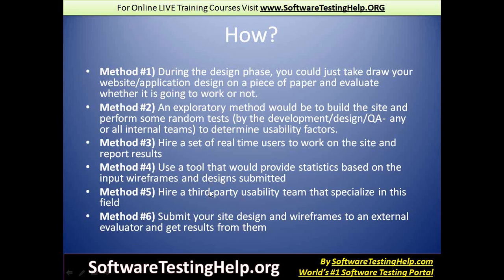Method four: there are automation tools where you can upload wireframes of your application and it will tell you whether it is a usable design. Method five: there are third-party usability teams who specialize in usability testing — they can come in, do an analysis, and report back results. Method six: you can submit site designs to an external evaluator and get results. Methods five and six are similar, but in method four you upload to websites that provide this service rather than a physical evaluator. These are the six ways in which usability testing is conducted.